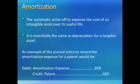The journal entry is to debit amortization expense and credit the intangible asset account. For example, if we were amortizing a patent, we would debit amortization expense and credit patent.